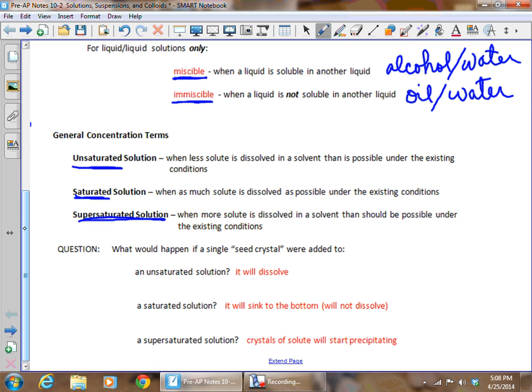What would happen if a single seed crystal were added to an unsaturated solution? By seed crystal, we mean a small crystal of the same substance that's already dissolved. If we were talking about a sugar water solution or salt solution, it would just be a small crystal of sugar or salt. If you put that into an unsaturated solution, it's simply going to dissolve.